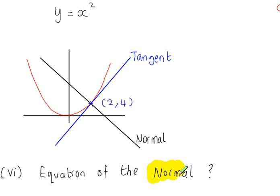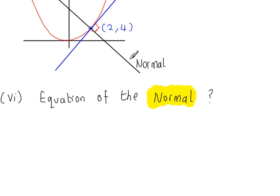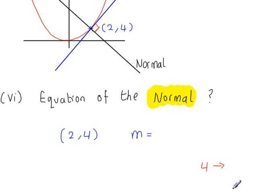The normal is a line that's perpendicular to the tangent. As you can see from the sketch, the tangent and the normal are at right angles to each other. The normal also goes through the point (2, 4). The gradient of the tangent was 4, and for a line perpendicular to that, we take the reciprocal and change the sign — so the gradient of the normal is minus 1 over 4.